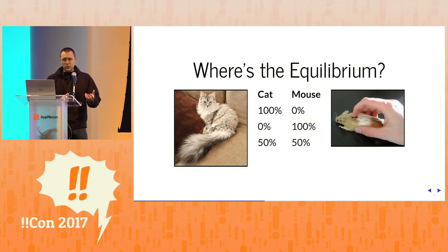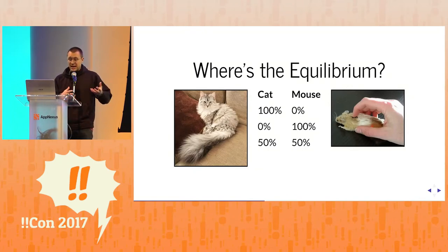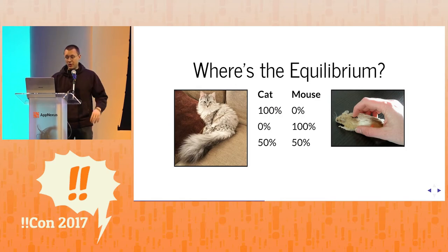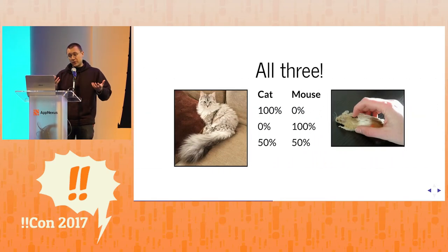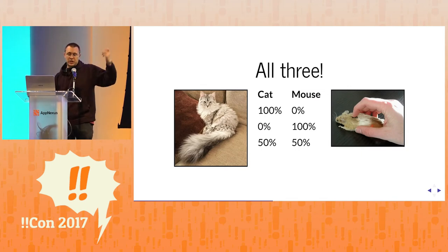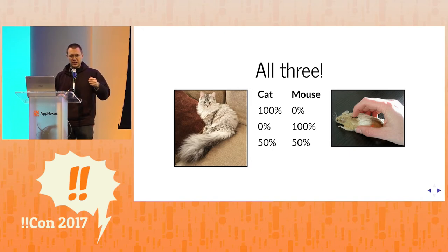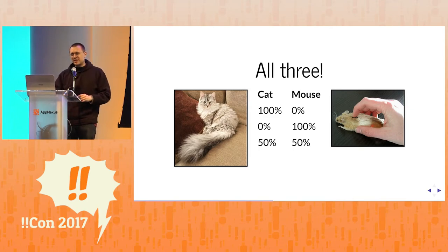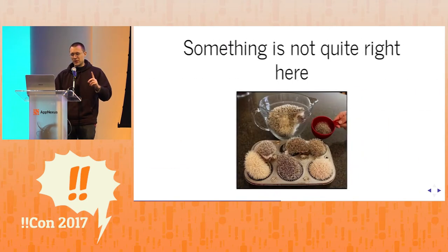So where is the equilibrium between these cats and these mice? One option is we both play cats, another is we both play mice, or maybe there's some middle thing. It turns out all three are equilibria. If we're both playing cats, I have no reason to splash in a mouse because my mouse will just get eaten. And if we're both playing mice, I have no reason to put in a cat because I can get three points for the cheese rather than two for eating your card.